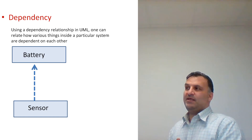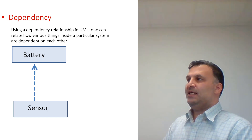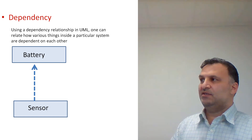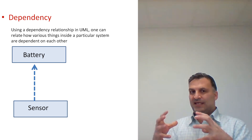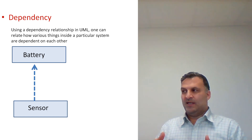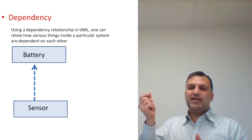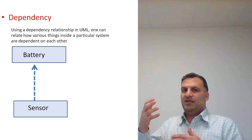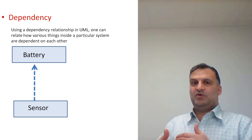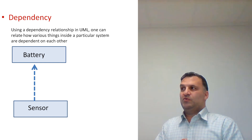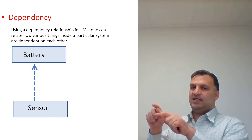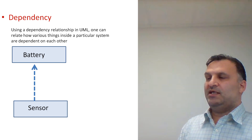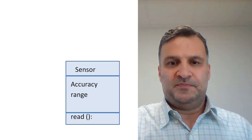Dependency is another relationship in UML used to represent how various elements inside a system are dependent on each other. It is a weak relationship — if we cannot represent something using aggregation, composition, or association, perhaps dependency is suitable. We will not go into much detail here because it is more related to programming than to analysis or design.